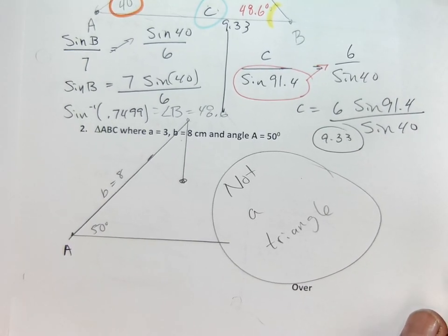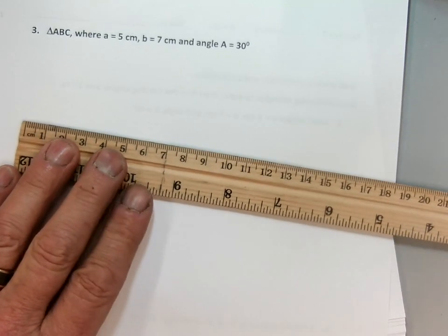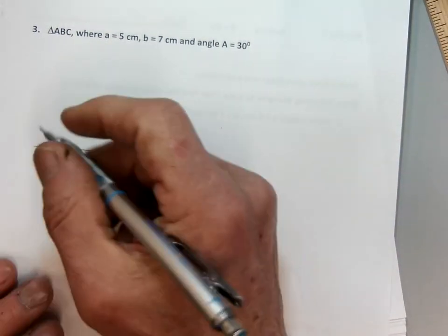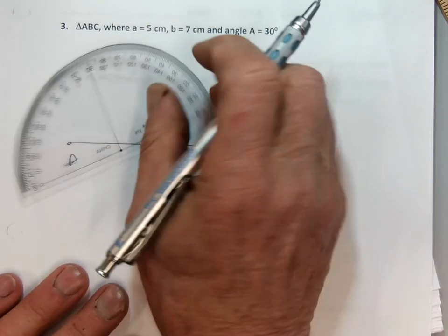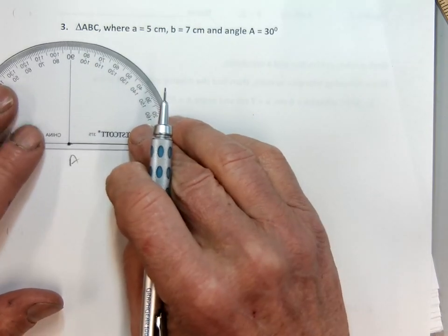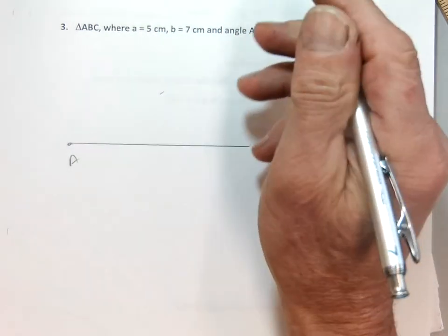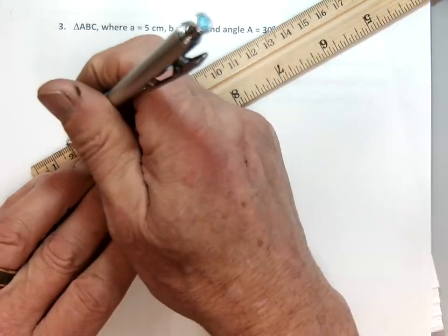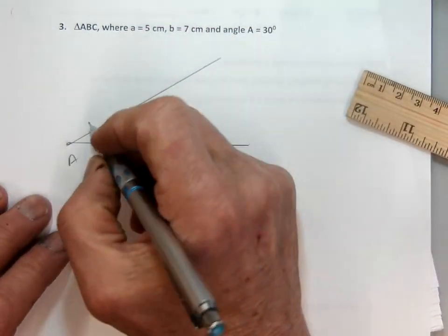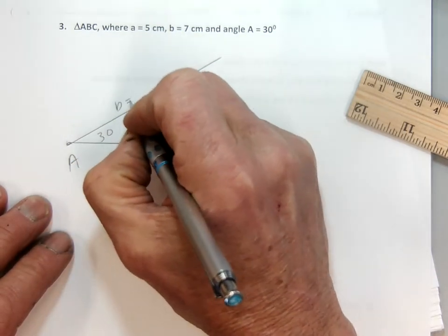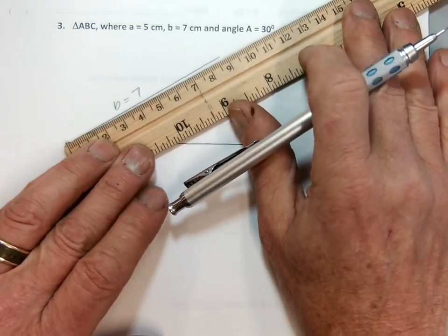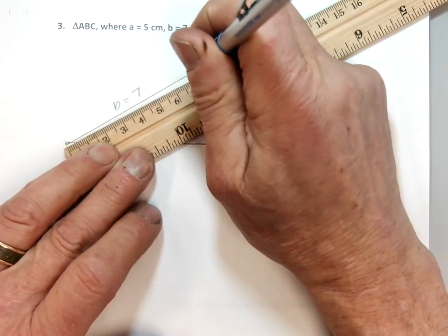Now the third example on the back, what happens here is when you draw it, you're going to get the following. Here's your angle A, which is 30 degrees. I draw in my 30 degree angle. Make this side B, which is seven. So I use my protractor, I'm sorry, the ruler. Seven's right there. So I'm going to erase the extra.